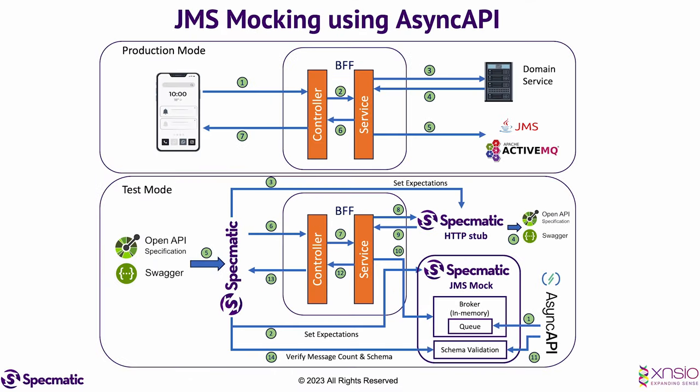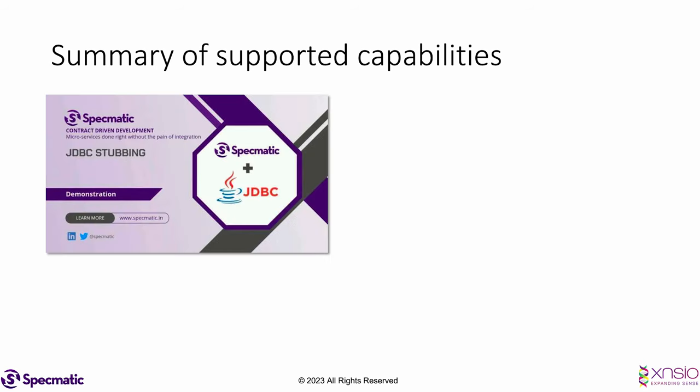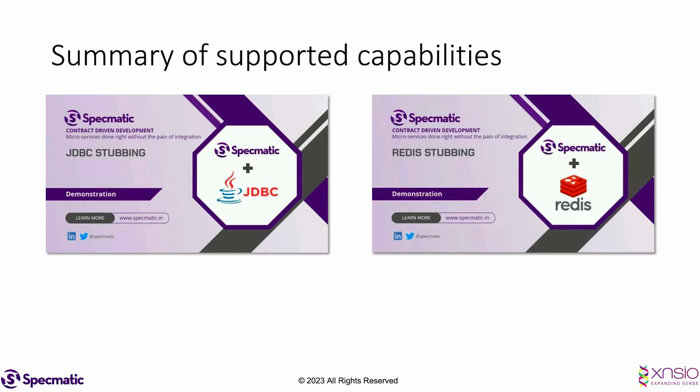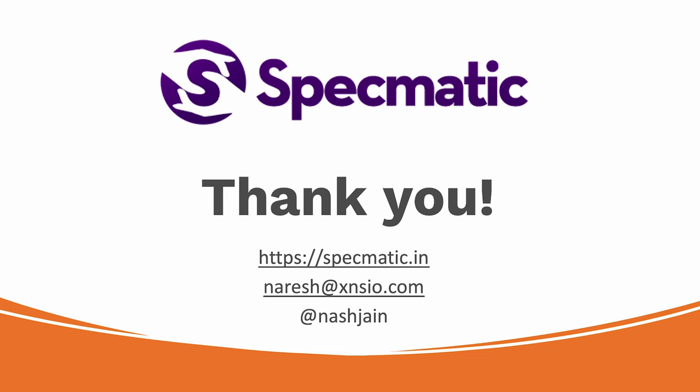Specmatic also supports AsyncAPI with JMS — you can mock that out. It supports stubbing out databases via a JDBC stub, stubbing out Redis, and many more capabilities. Check us out at specmatic.in. Thank you.